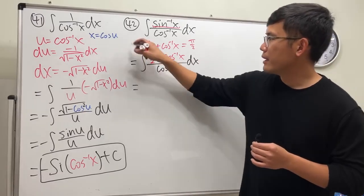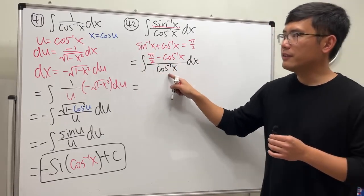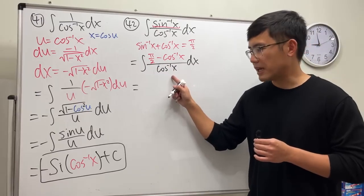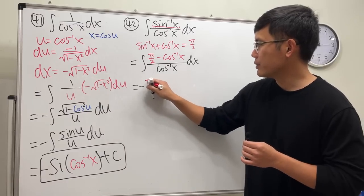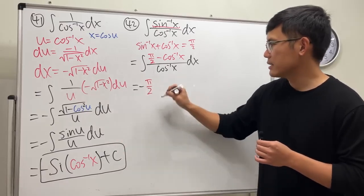Okay. Pi over 2, and then inverse cosine x on the bottom. So it's just that. So it's negative, and then we have the pi over 2, and then that. So the first part.